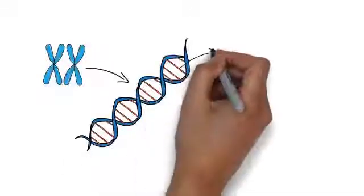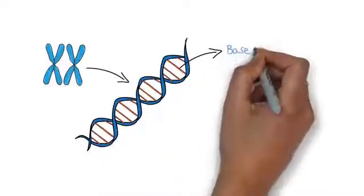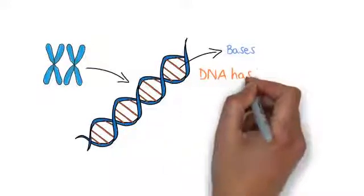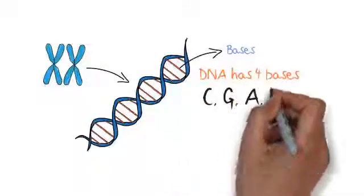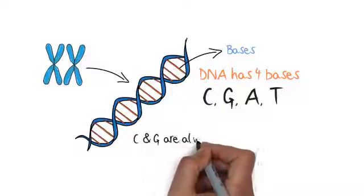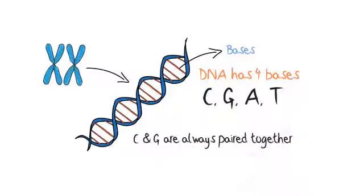If you were to unravel a chromosome, it would be like a double helix, like a twisted ladder. On both sides, you have something called bases. These are the steps of the ladder. DNA has four bases: C, G, A and T. C and G are always paired together. A and T are also always paired together. Even if it is the other way round, you never get C matching with A or G matching with T.